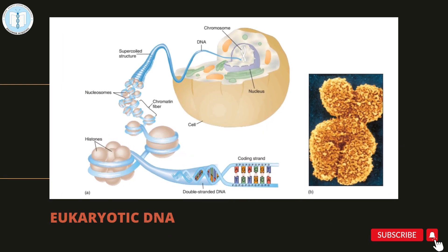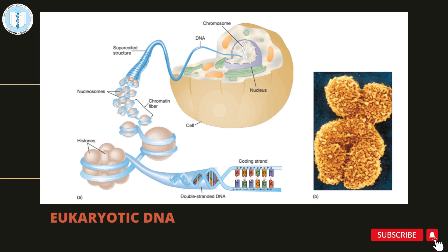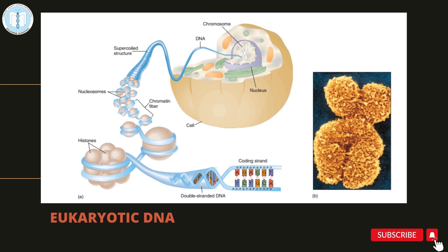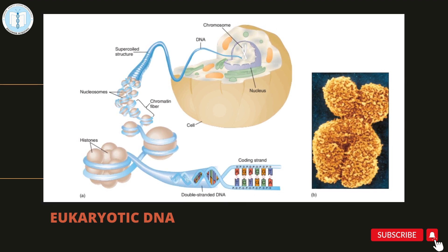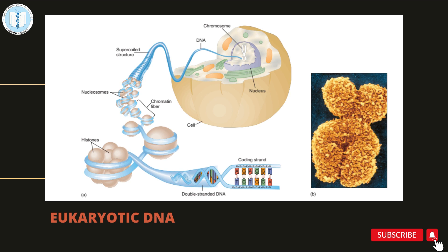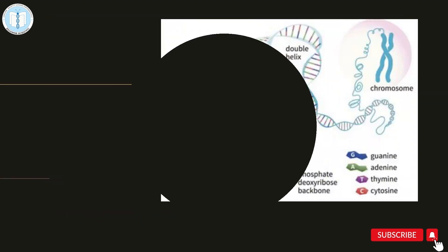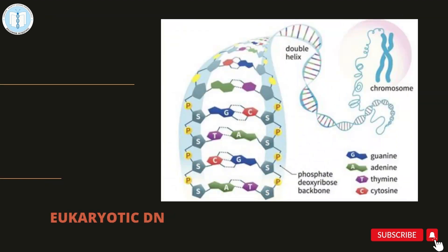Let us begin with the eukaryotic DNA. The nuclei of eukaryotic cells contain double-stranded DNA that is arranged into a three-dimensional helix. Base pairs are used to describe the length of a DNA molecule. Each nucleotide is composed of a sugar molecule containing five carbon atoms, a phosphate group, and a nitrogenous base.